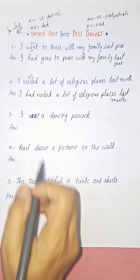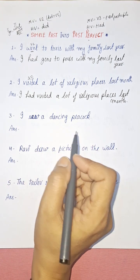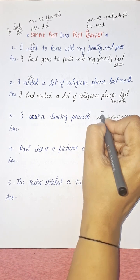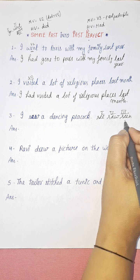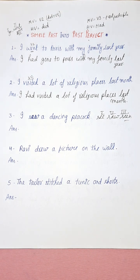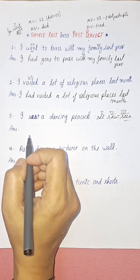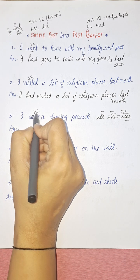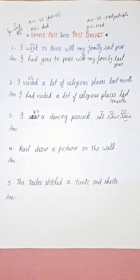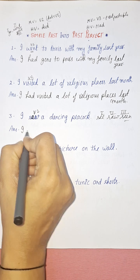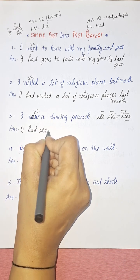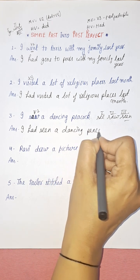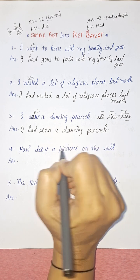The third sentence: 'I saw a dancing peacock.' 'Saw' is the V2 form, showing it is simple past tense. The three forms are: see, saw, seen. So to convert to past perfect, we use the third form: 'I had seen a dancing peacock.'